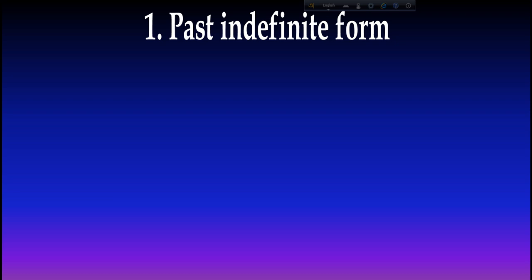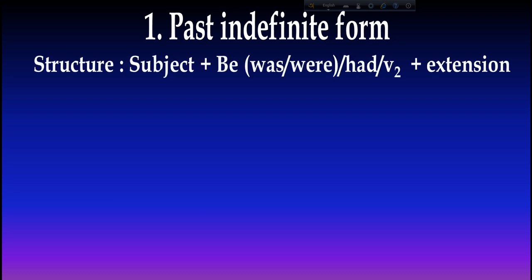First — past indefinite form. Structure: Subject + be (was/were) + extension. Or: Subject + verb two (past form) + extension. Keep in mind that every verb has three forms: present, past, and past participle. Verb two means the past form.